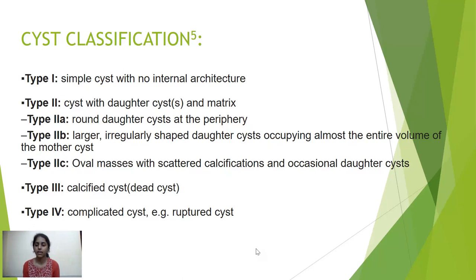Biliary cyst classification: Type 1 is a simple cyst with no internal architecture. Type 2 is a cyst with daughter cysts and matrix, with three subtypes — Type 2a has round daughter cysts at the periphery; Type 2b has larger irregularly shaped daughter cysts occupying almost the entire volume of the mother cyst; Type 2c has oval cysts with scattered calcifications and occasional daughter cysts. Type 3 are calcified cysts and Type 4 are complicated cysts such as ruptured cysts.